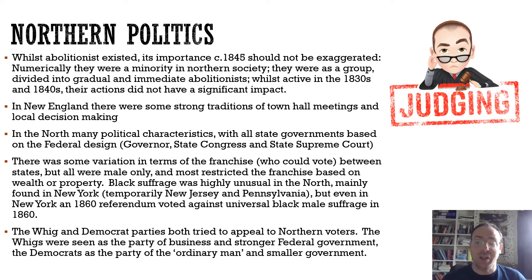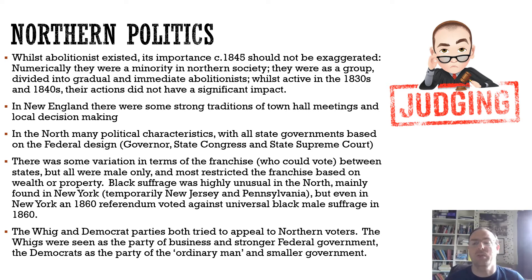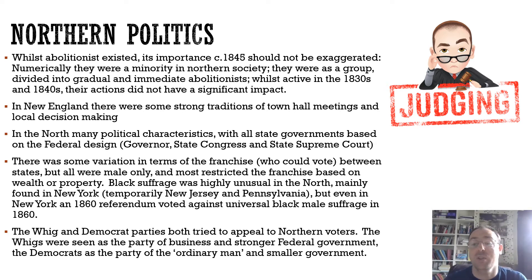In the north you've got three groups: the abolitionists who are very anti-slavery at one extreme; at the other extreme those with a vested interest in slavery making money through it, even without owning slaves themselves — their interactions with the southern cotton industry, for example, might be making them lots of money; and then the group in the middle who were generally not keen on slavery but not greatly concerned because it wasn't happening where they lived. In New England there are strong democratic traditions, particularly town hall meetings where local decisions are made. The political structure we see in the north mirrors the federal design — a governor, a state congress often with two houses, and a state Supreme Court — and that happens in the north and in the south as well, so that's something they have in common.